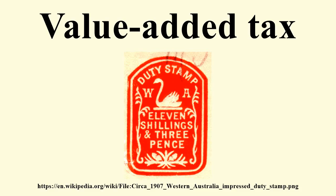Examples: Consider the manufacture and sale of any item, which in this case we will call a widget. The term 'gross margin' is used rather than 'profit' — profit is the remainder of what is left after paying other costs such as rent and personnel costs. Without any tax, a widget manufacturer spends $1 on raw materials and uses them to make a widget. The widget is sold wholesale to a widget retailer for $1.20, leaving a gross margin of $0.20. The widget retailer then sells the widget to a widget consumer for $1.50, leaving a gross margin of $0.30.